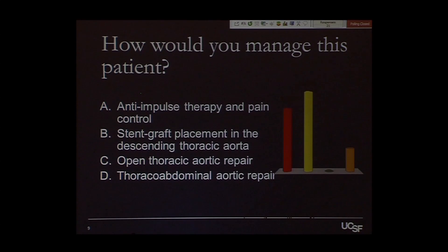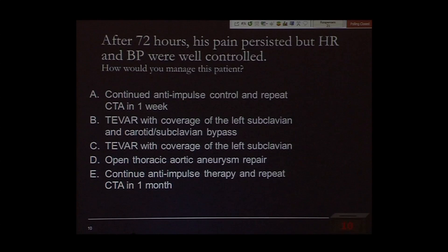48% would have placed a stent graft in the descending thoracic aorta, and another 38% would have done anti-impulse therapy. We chose anti-impulse therapy in this patient. He did have an acute hypertensive episode that was stabilized, and we placed him on a couple of drips. At 72 hours, his pain persisted but felt a little better, with heart rate and blood pressure well controlled — systolic blood pressure of 100 to 110. How would you now manage this patient?